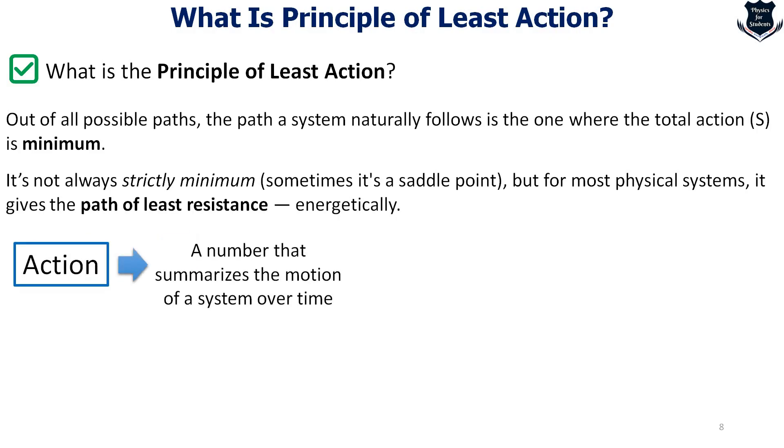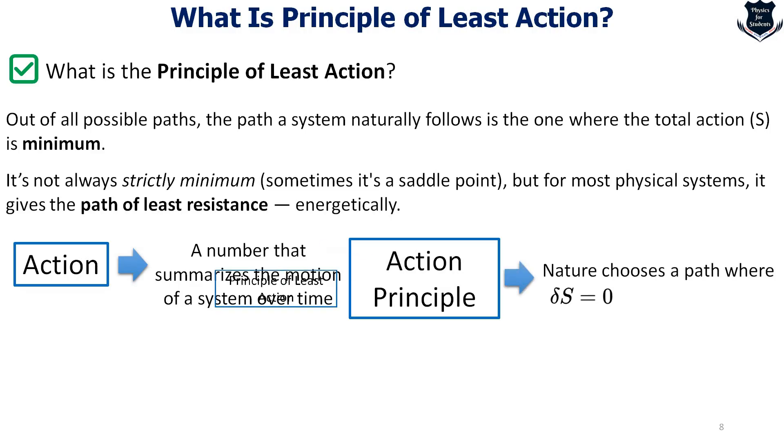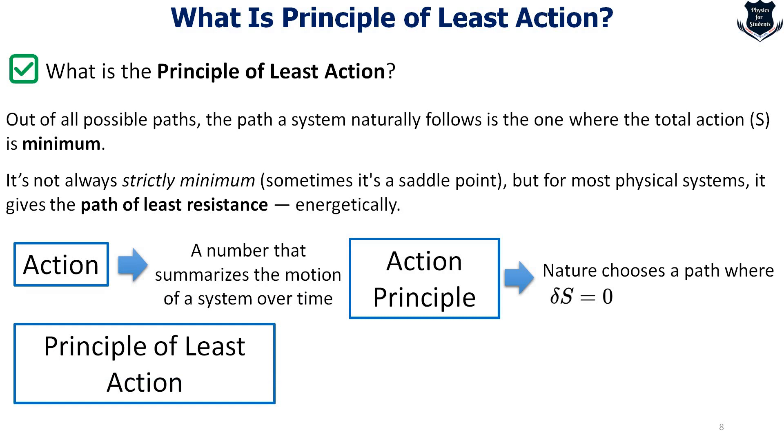We got first the action, a number delta S equals zero that summarizes the motion of a system over time. Then we got the second one which is called the action principle, where nature chooses a path where delta S equals zero. And then the principle of least action, it is the principle that also happens to minimize the action in most of the real cases.